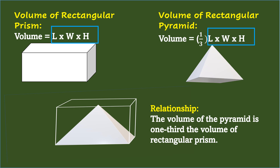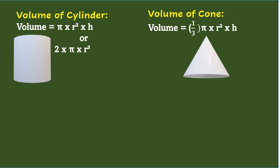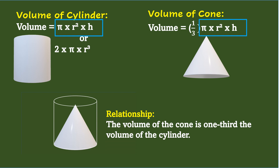As for the Cylinder, the volume is Pi times Radius squared times Height. And for the Cone, the volume is one-third times Pi times Radius squared times Height. Since Pi times Radius squared times Height is exactly the formula for the volume of Cylinder, the relationship is that the volume of the Cone is one-third the volume of the Cylinder.